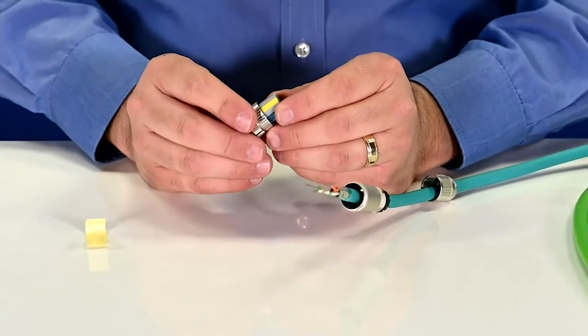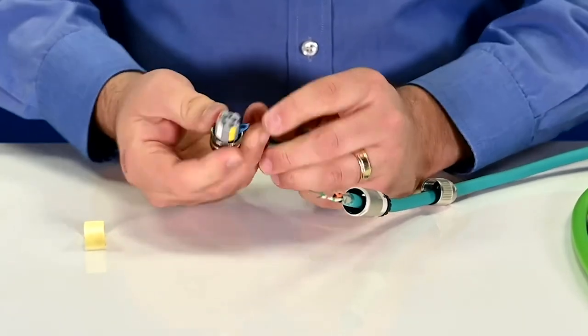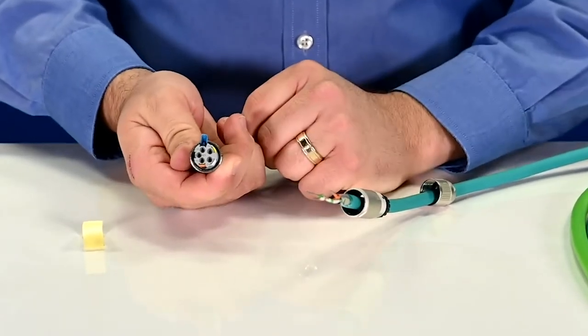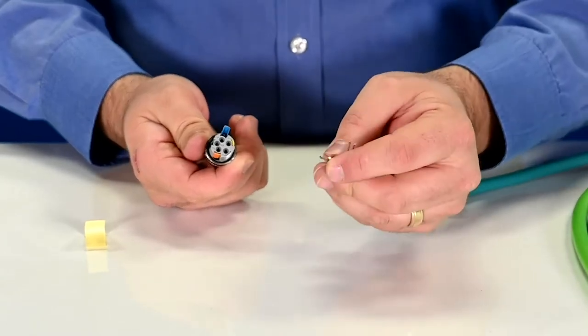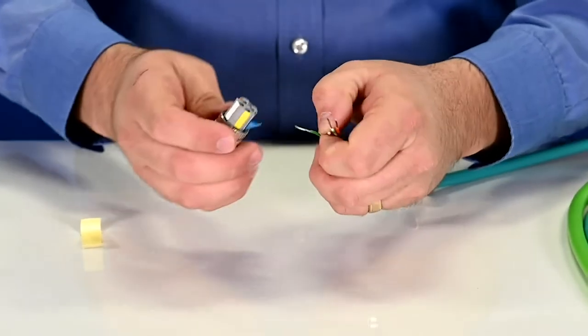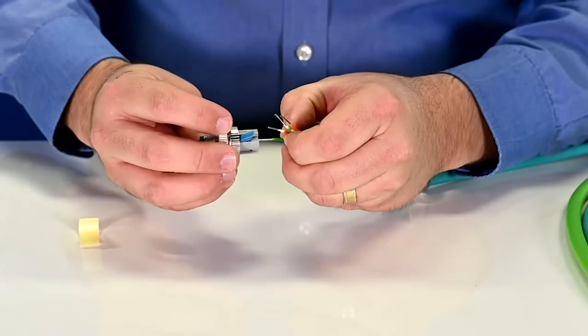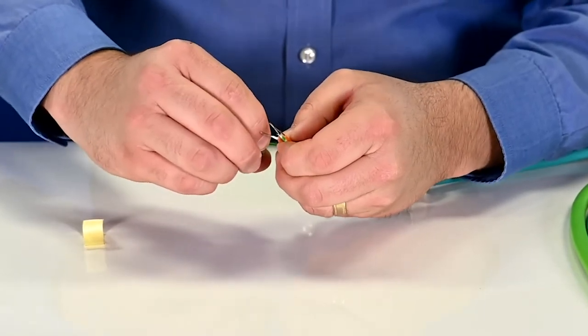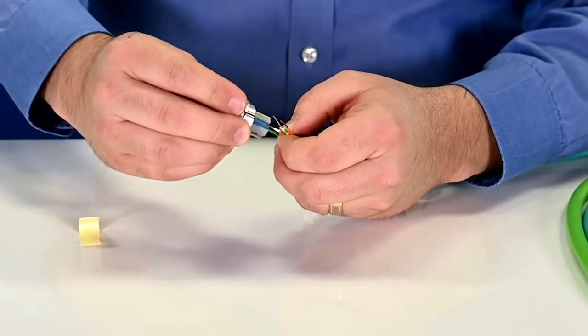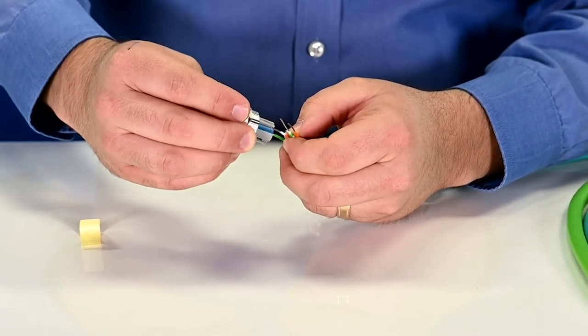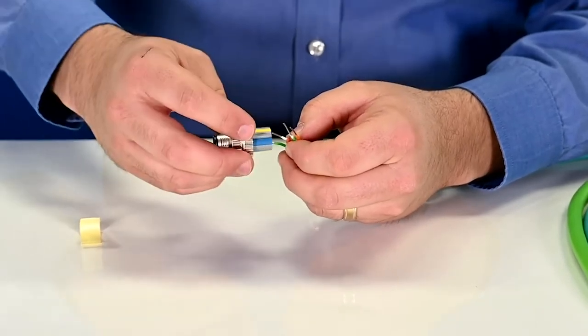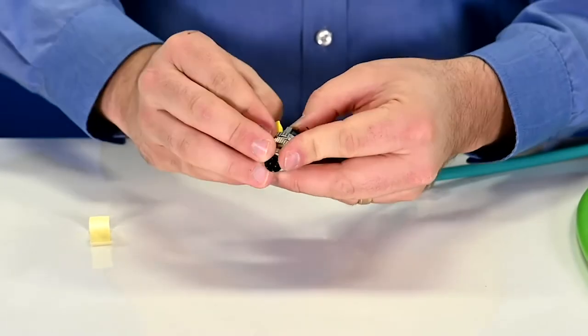Very easy to open up those contacts. You just take a fingernail and pop them right open. Once you have that contact open, you simply take your conductor, insert it into the contact, and close that contact. You now have a vibration-proof connection between the connector and the conductor. So we'll go ahead and do that for the rest of our conductors as well.